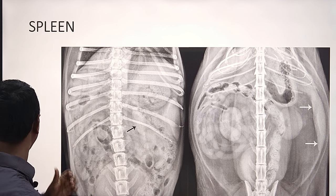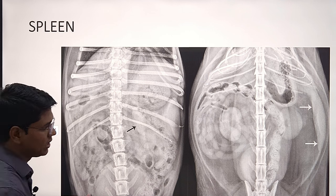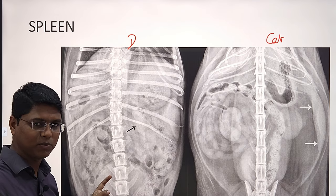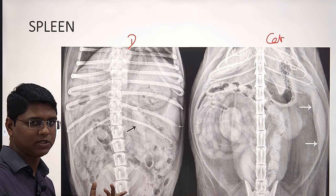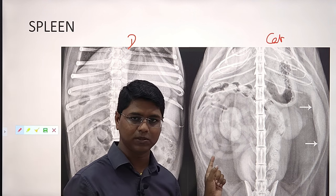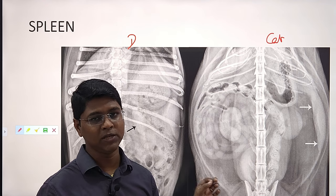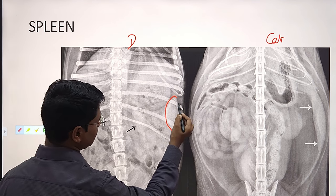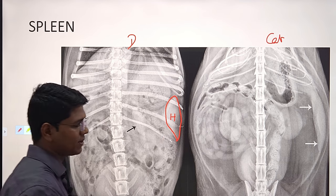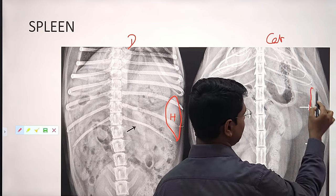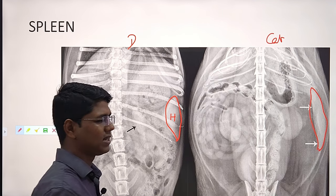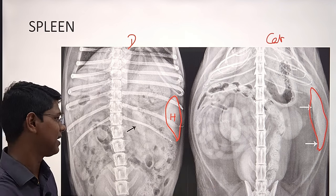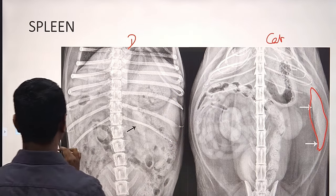Next is spleen. In lateral radiographs — this is dog, this is cat. In case of dog, both head and tail can be visible, but many times only the tail is visible. In case of cat, only the head is visible in lateral radiograph — tail is not at all visible. If it is visible, then there is some splenomegaly. In dorsal ventral view, you will find the splenic head. In cat, spleen is comparatively thinner and the entire spleen can be visualized — all organs are very nicely visualized in case of a cat due to mesenteric fat.